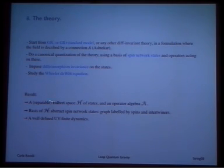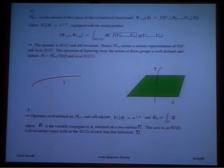These constructions give a separable Hilbert space of state and algebra of operators. In the Hilbert space of gauge invariant state, there is a basis which is given by these abstract graphs labeled by spins and intertwiners. And the dynamics turn out to be ultraviolet finite. Now let me give you some more details.